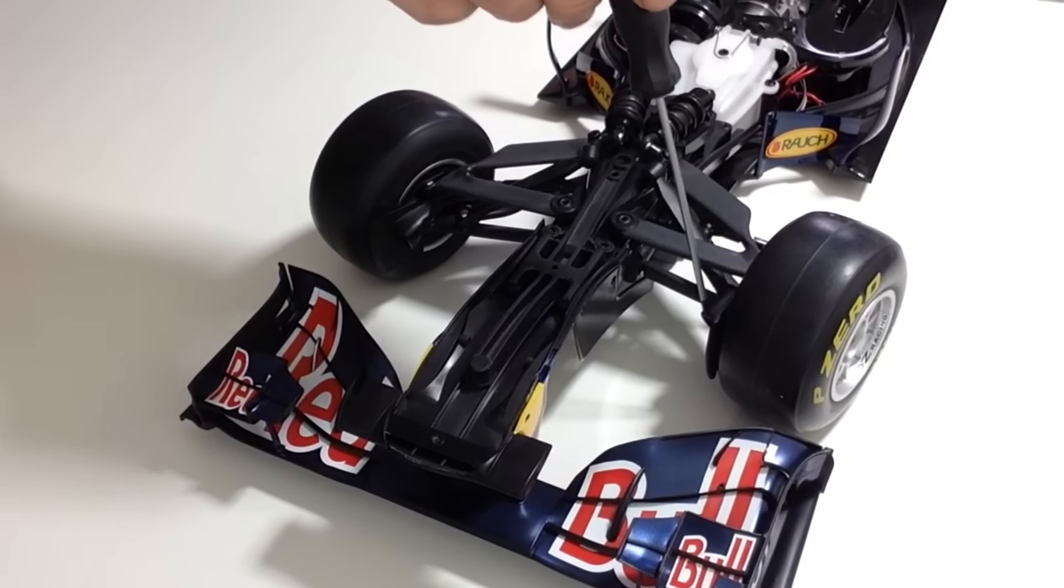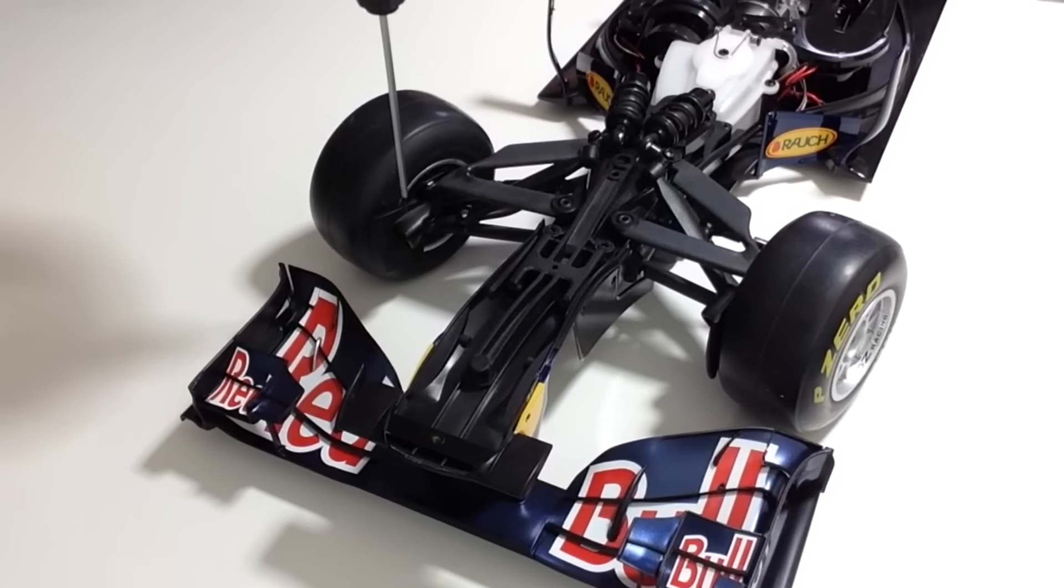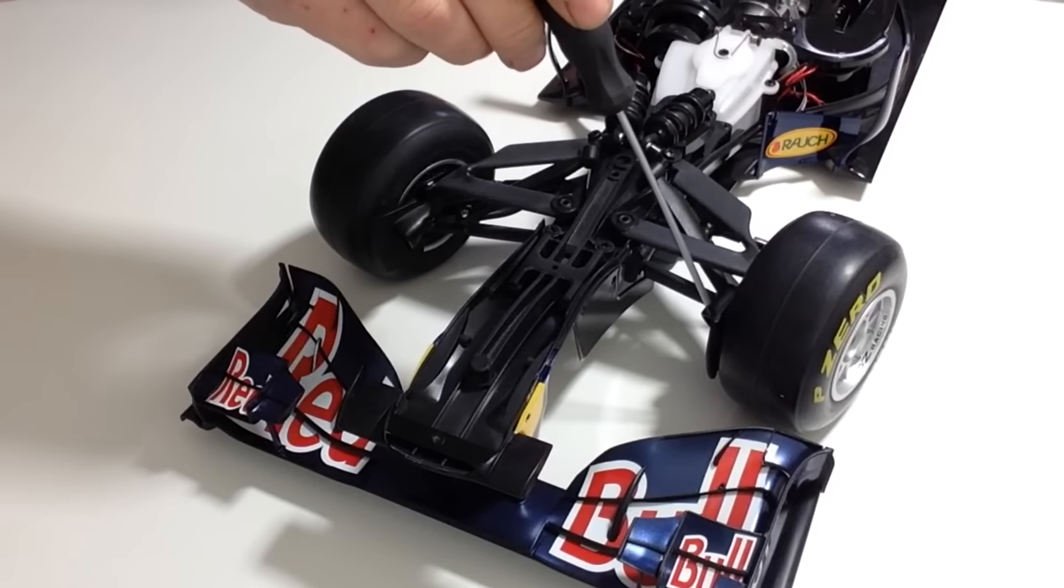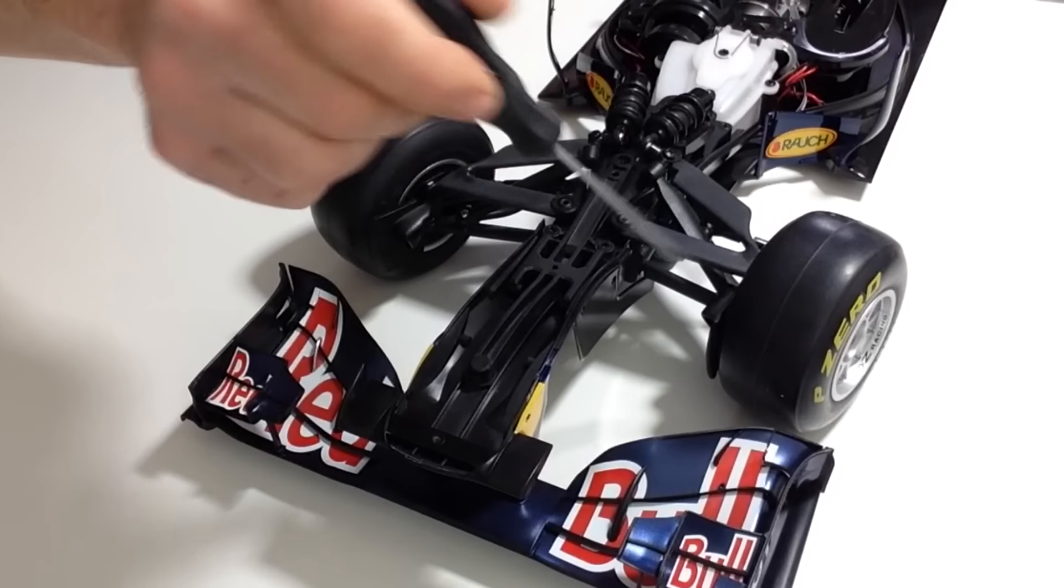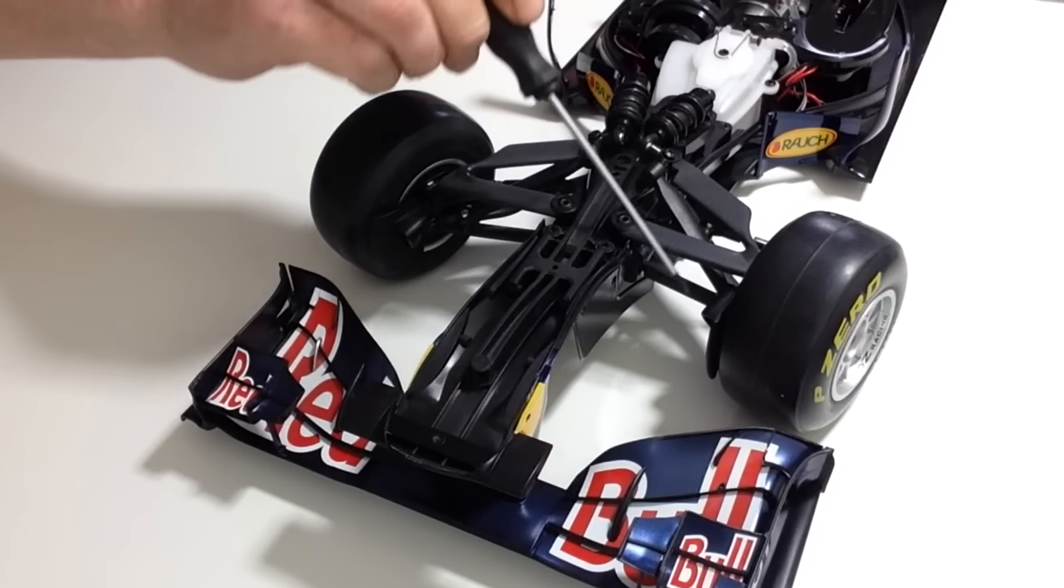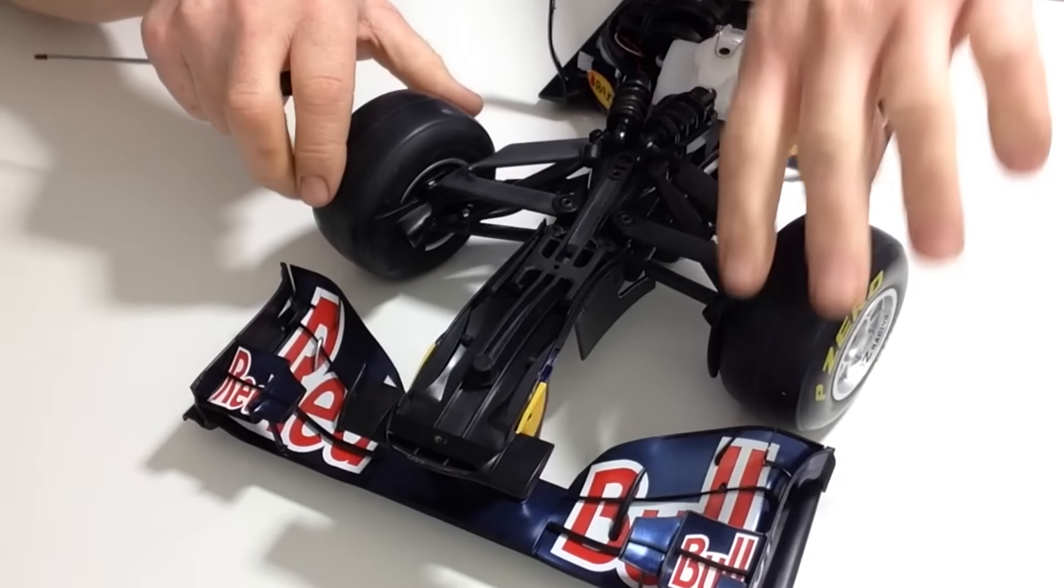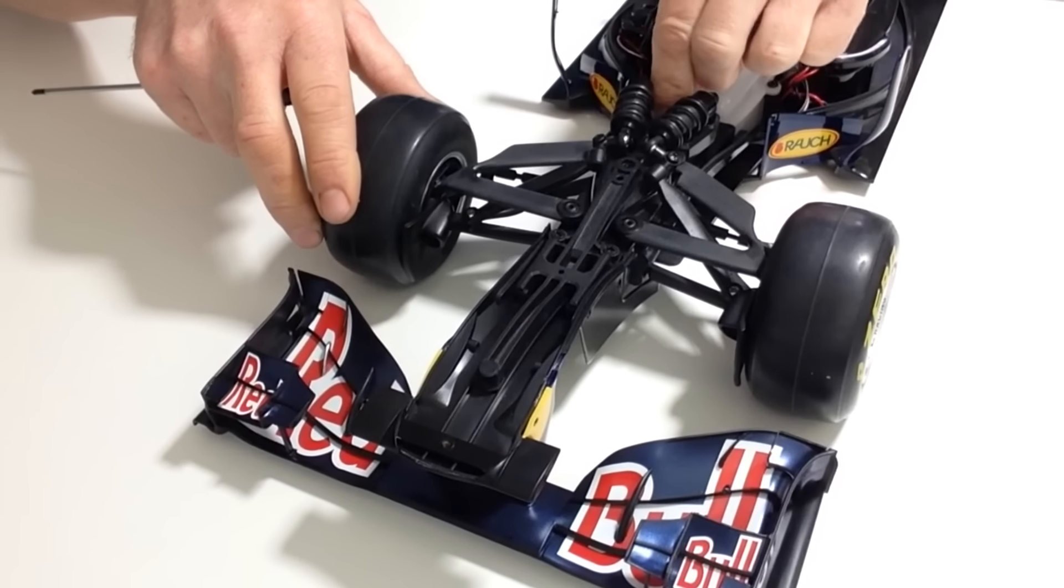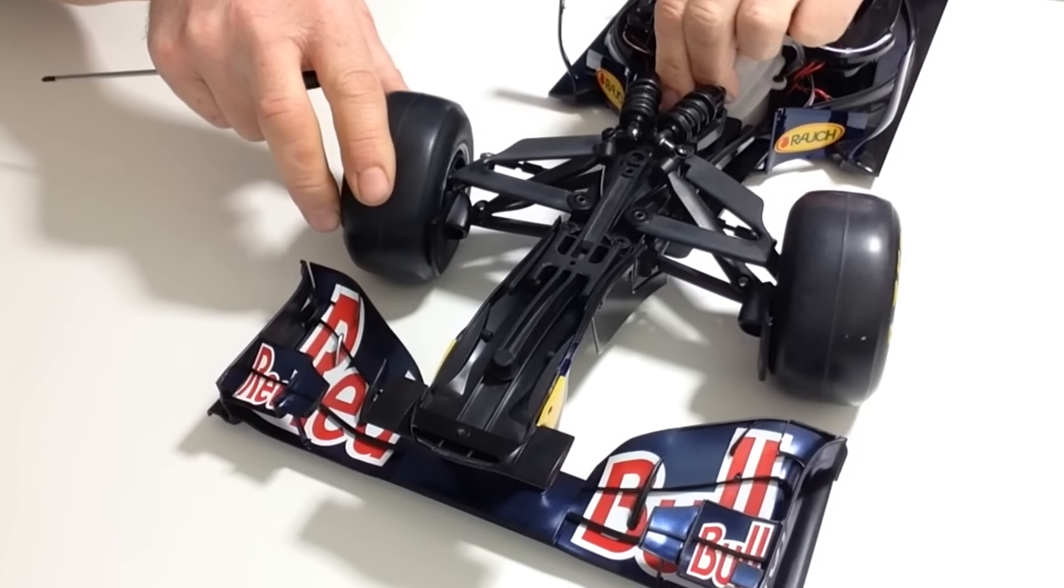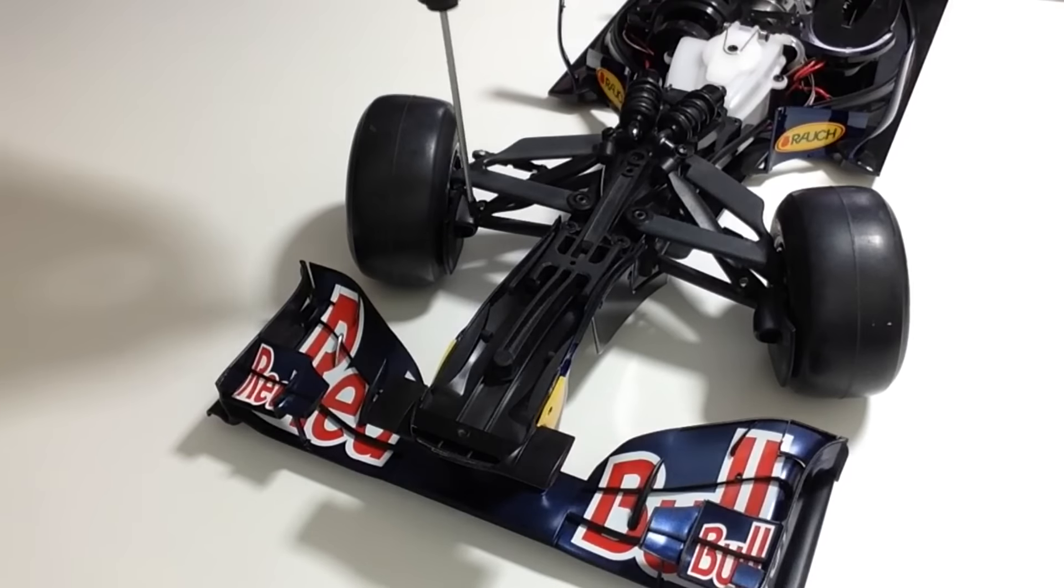Next you're going to be wanting to put the racing air ducts on the front. Just look at the instructions and apply one of the screws into the sides. You'll have to turn the steering a little bit by bit just so that you can get the screwdriver in. As you can see, we've got both the front ducts in position.